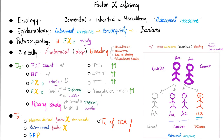Factor 10 deficiency: it's congenital, autosomal recessive, therefore consanguinity — particularly Iranians. Pathophysiology: there is decreased factor 10 activity. Clinically, we have deep anatomical bleeding. In neonates: bleeding after separation of the umbilical cord and bleeding on circumcision. In adults: hemarthroses, hematomas, intracranial bleeding, retroperitoneal bleeding, and some mucocutaneous bleeding such as petechiae, purpura, ecchymosis. Platelet count and bleeding time are perfectly normal. Platelet aggregometry is also normal. PT, PTT, and TT are all prolonged — though TT could be normal.